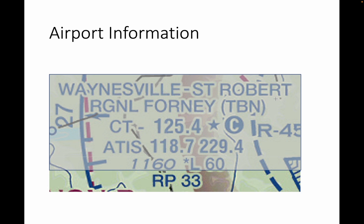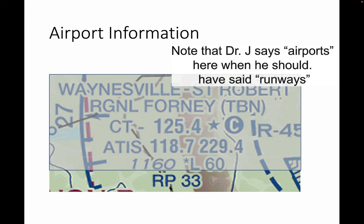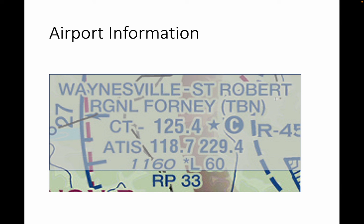The final piece of information, RP 33, stands for right pattern. Runway 33 at this airport uses a right-handed traffic pattern. Whatever other runways are there and not specified, those are assumed to be left traffic pattern. All airports not specified are assumed to be left traffic pattern. If an airport is specified, it'll be listed as right traffic pattern. So the right traffic patterns are specified; anything not specified will be left traffic pattern.